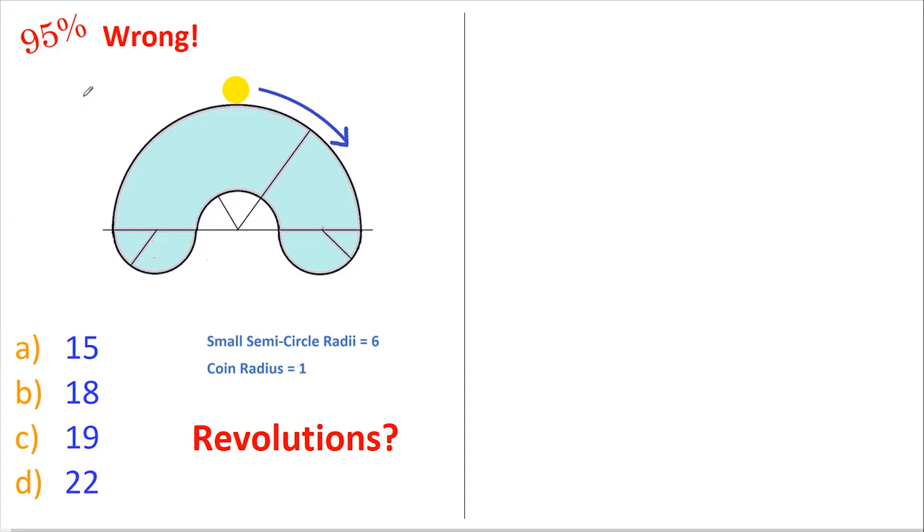Hi, welcome back to today's video. In this problem, a coin rolls around this track, and you simply have to calculate how many revolutions the coin makes. The coin has a radius of one.